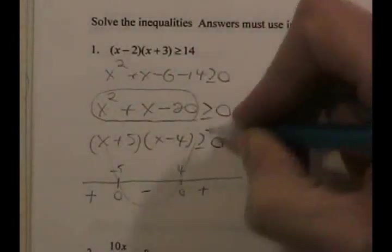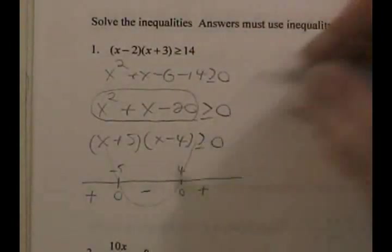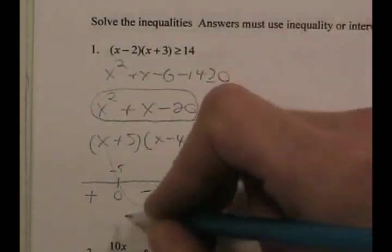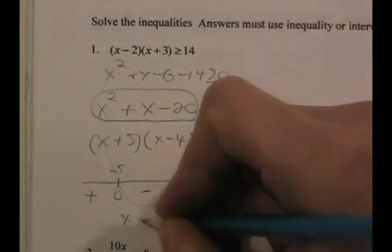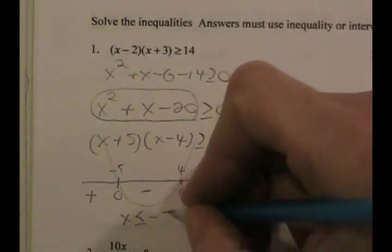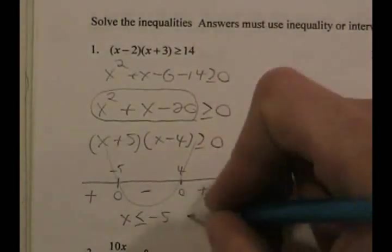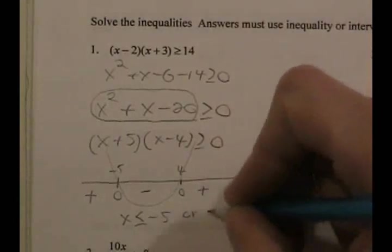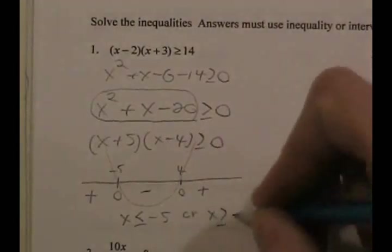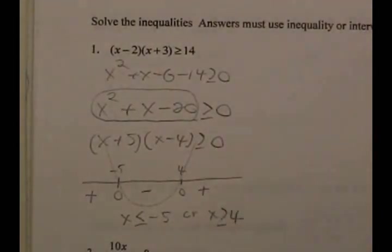Since we want greater than or equal to zero, we want the positive regions. The answer is x is less than or equal to minus 5, or x is greater than or equal to 4.